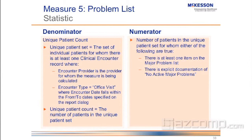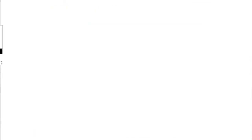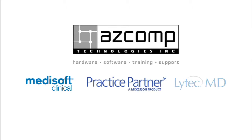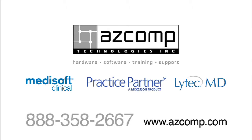And here's the numerator. There is at least one item on the major problem list, or there is explicit documentation of 'no major active problem.' So it's really looking at the major problems list — not the other problems or the diagnosis list.